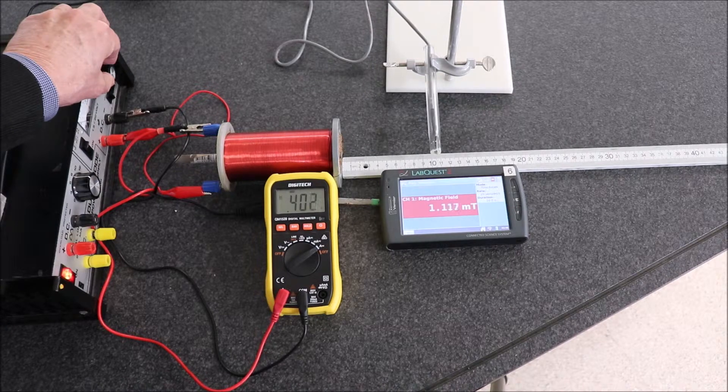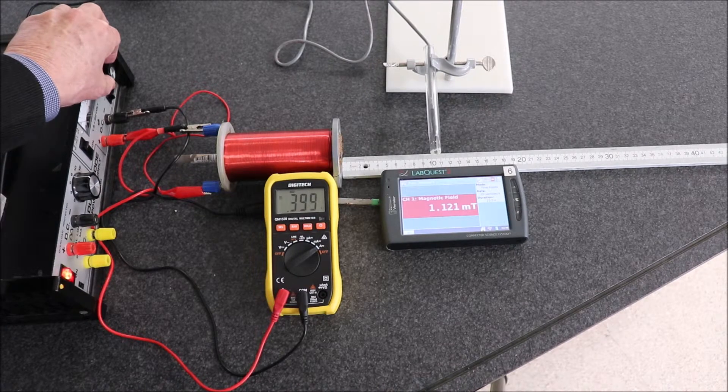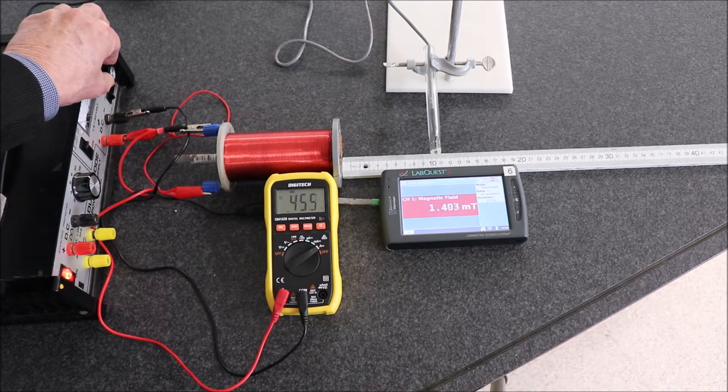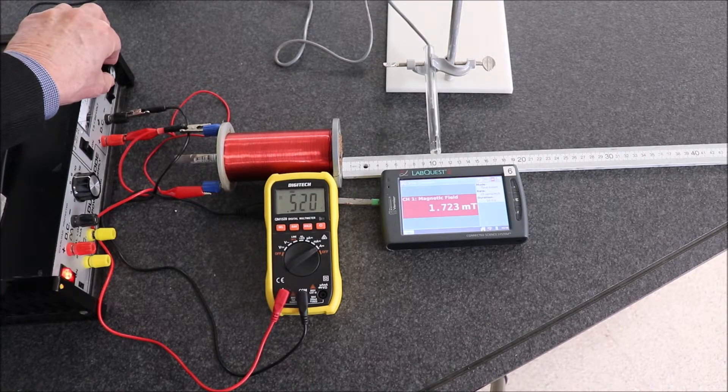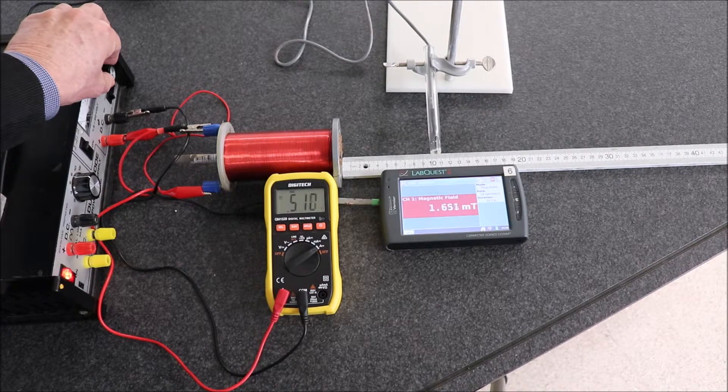So we can just keep taking pairs of data, eventually plot this, so we'll get up to 0.5 and it's about 1.7 or something like that.